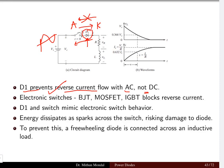When we talk about the electronic switch in the form of BJT, MOSFET, or IGBT which we are going to discuss in more detail in the coming lecture, this will block the reverse current. The diode D1 and switch will mimic the electronic switch behavior and the energy which is dissipated as sparks across the switch risks damage to the diode.